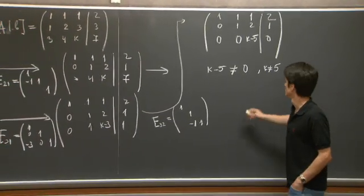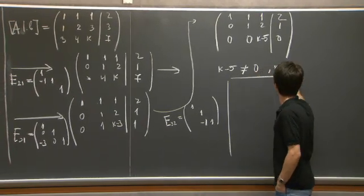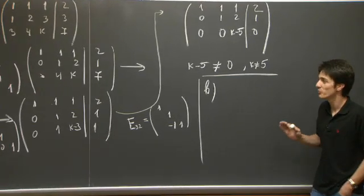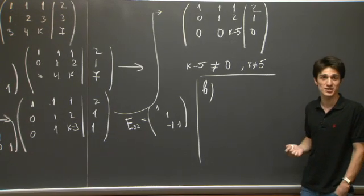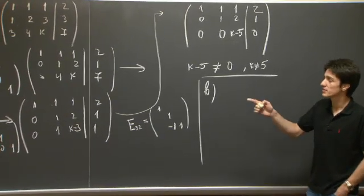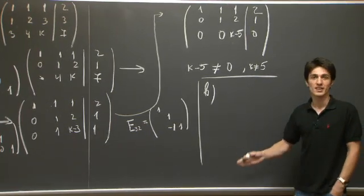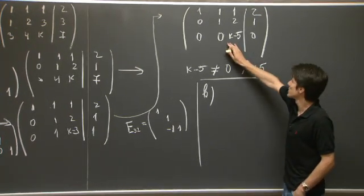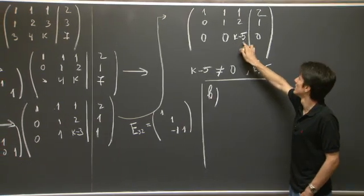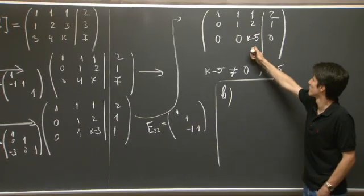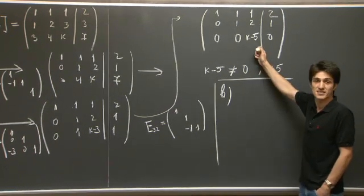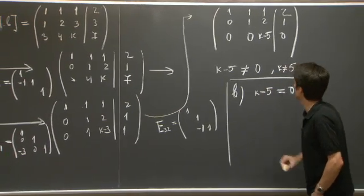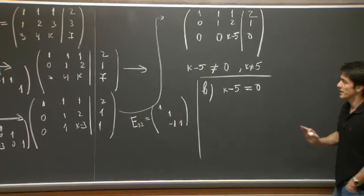Now, part B. For which k do we have infinitely many solutions? So when are we in such a situation? We are in such a situation when the null space of the matrix A is non-trivial. So the null space will be non-trivial when this k minus 5 number here, which was the pivot in the first case, is 0. So k minus 5 equals 0.